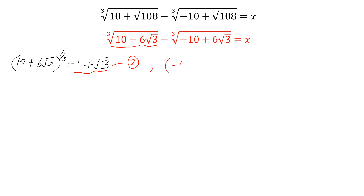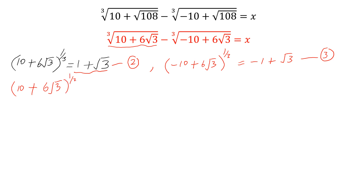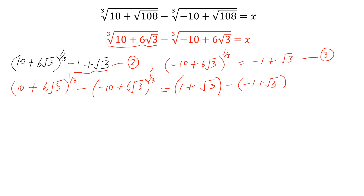Similarly, for the second term: −(10 + 6√3)^(1/3) = −(1 + √3). Let this be equation 3. Now subtracting equation 3 from equation 2: (10 + 6√3)^(1/3) − (−(10 + 6√3)^(1/3)) = (1 + √3) − (−1 + √3). Simplifying, the √3 terms cancel and 1 + 1 = 2. So the value of x is 2.